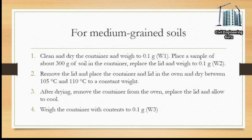Procedure for medium grained soils: clean and dry the container and weigh to 0.1 grams (W1). Place a sample of about 300 grams of soil in the container, replace the lid, and weigh to 0.1 grams (W2). Remove the lid and dry in the oven between 105°C and 110°C to constant weight. Remove, replace lid, allow to cool, and weigh to 0.1 grams (W3).